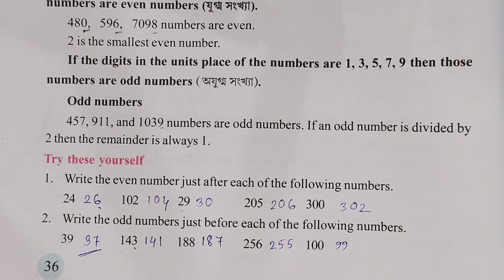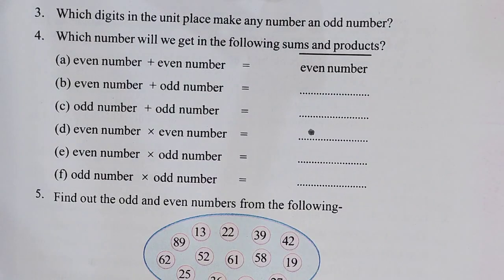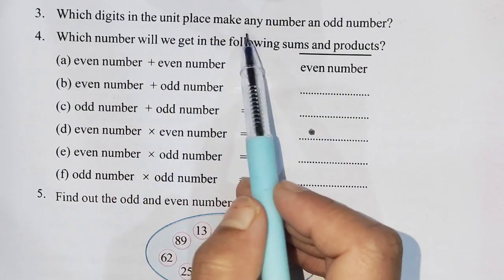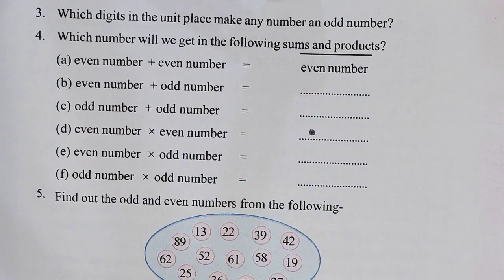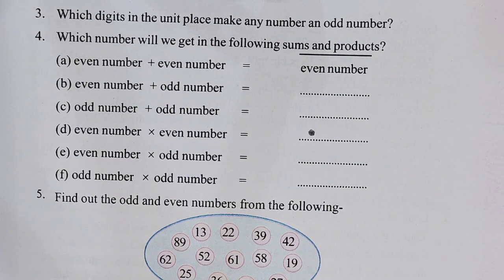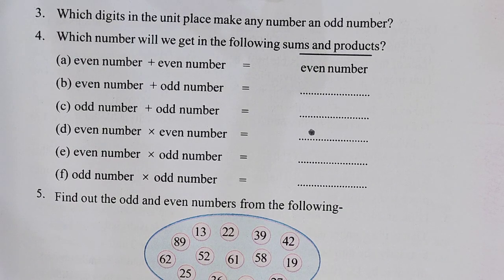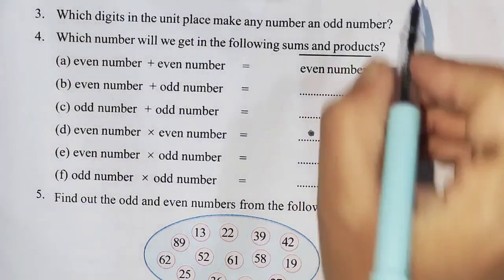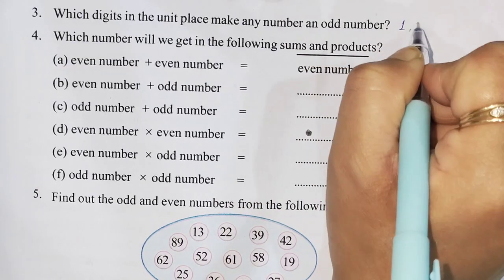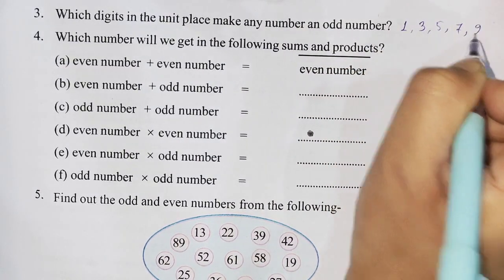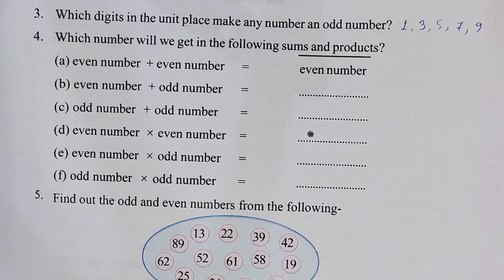Next, question number 3: which digit in the units place makes a number an odd number? The answer is 1, 3, 5, 7, and 9.